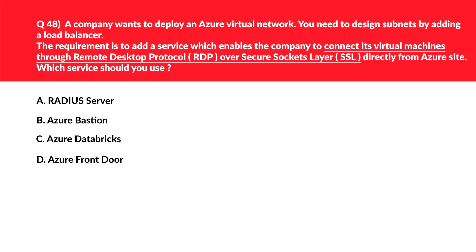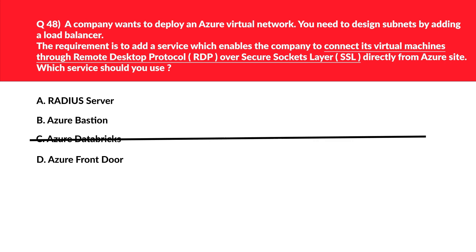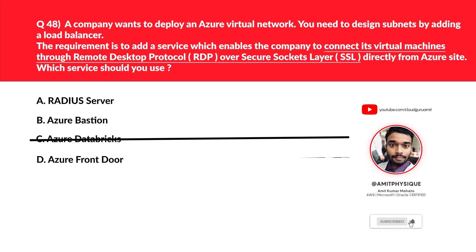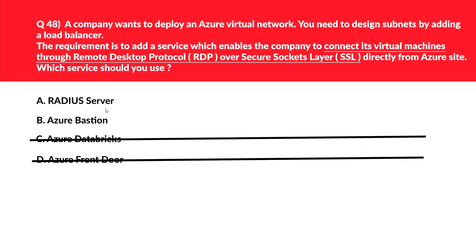This question is about RDP and SSH. Let's first look at option C, Azure Databricks — it is totally out of context as it's a data analytics platform. Rejected. Option D is Azure Front Door, which cannot be used to connect virtual machines through RDP or SSH over SSL. Also incorrect. We are left with A and B. Option A, the RADIUS server, is a network protocol that enables centralized dial-in user authentication and authorization. The question is not about authentication and authorization, therefore it's an incorrect choice.